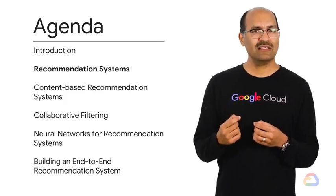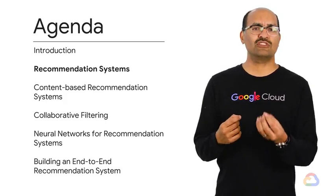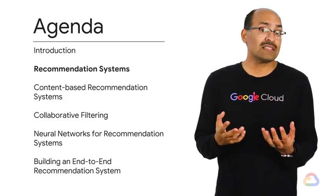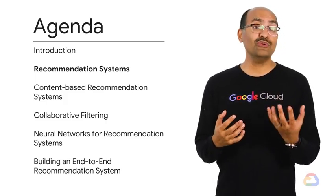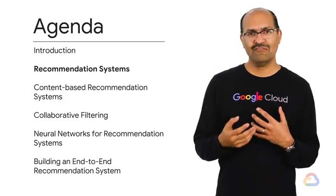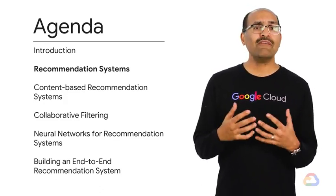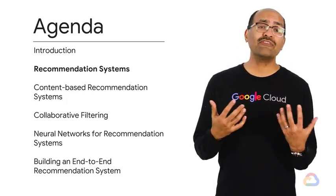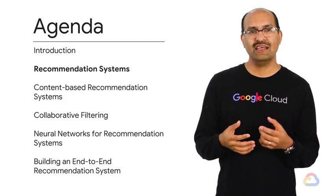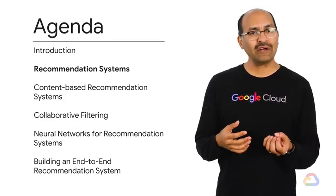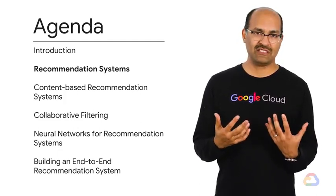Recommendation systems are not just about suggesting products to users. Sometimes they can be about suggesting users for products. For example, in marketing applications you may have a new promotion and you want to find the thousand most relevant current customers. That's called targeting, and that is also done by a recommendation system.